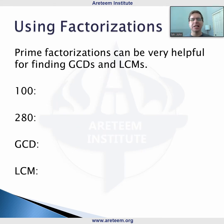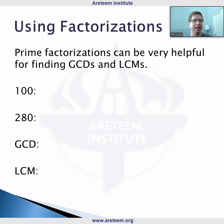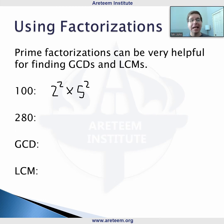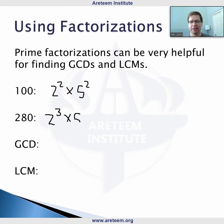What happens if the numbers are not as small? When we have larger numbers, you can rely on the prime factorizations when calculating the GCDs and the LCMs. We're breaking down a number into the product of primes. So 100 is 2 squared — that's 4 — times 25, which is 5 squared. You might like to think of 280 as 28 times 10. 28 is 4 times 7, and 10 is 2 times 5. The prime factorization is 2 cubed times 5 times 7 — that's 8 times 35, which is 280.